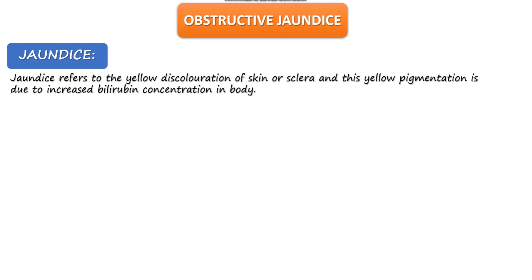To understand obstructive jaundice, you should first know what jaundice is. Jaundice is defined as increased concentration of bilirubin in your body. Bilirubin is a basic component produced in the liver involved in bile salt production and the yellow coloration of feces and urine. High concentration of bilirubin leads to jaundice, which is defined as discoloration of the skin or sclera. This yellow pigmentation is due to increased bilirubin concentration. The patient usually has yellow sclera because bilirubin loves to bind to the elastic tissue of the sclera.